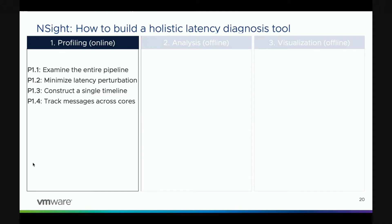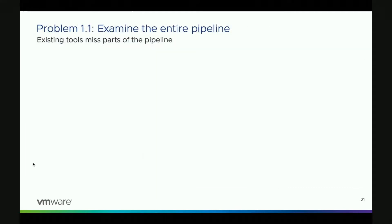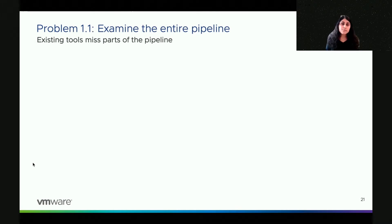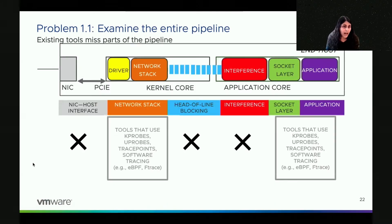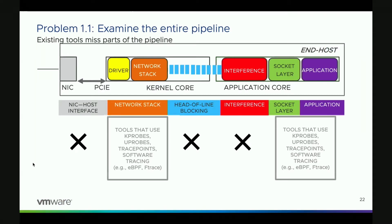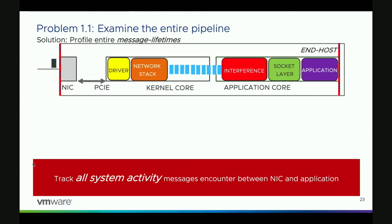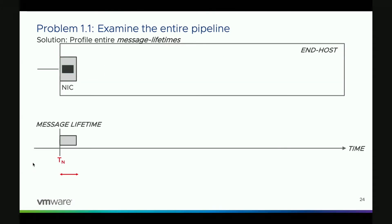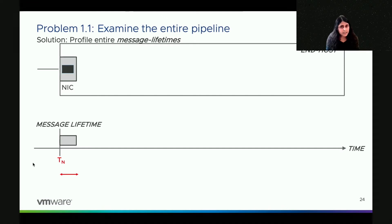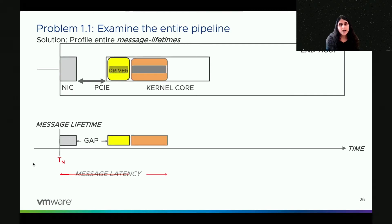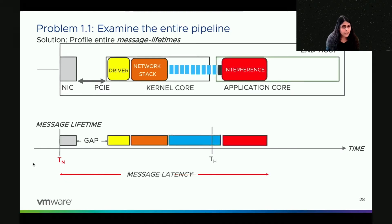I'm going to tell you how we can build such a tool. There are three important things we must do: collect profiling data, have a system that analyzes this data, and present visualizations so the user can act on them. Let's talk about profiling. There are four problems we encountered when building the profiling tool. First, we want to examine the entire pipeline, but most profiling tools miss parts of it. We don't have tools that directly and precisely measure network latencies due to the NIC-host interface, head-of-line blocking, or interference. In order to examine the entire pipeline, we must track all system activity and message encounters between the NIC and the application.